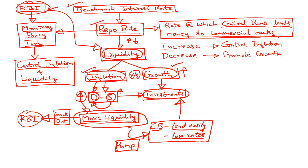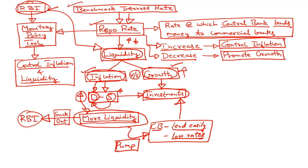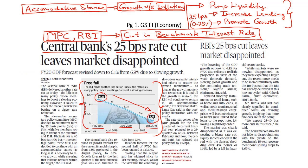The RBI manages liquidity by using the benchmark interest rate known as the repo rate. If the RBI increases the repo rate, it is looking to control inflation even at the risk of compromising economic growth. If the repo rate is decreased, the RBI has adopted an accommodative stance and is looking to promote growth even at the risk of promoting inflation. Over the last five months, the RBI has consistently adopted an accommodative stance by keeping in mind the slowdown in the Indian economy, reducing the repo rate to increase liquidity so that economic growth can be revived.